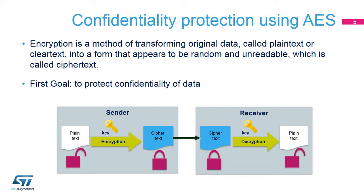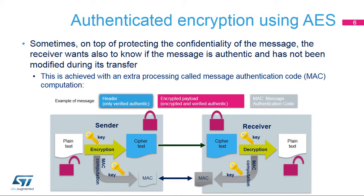The sender encrypts a plaintext message using a secret key, and the receiver decrypts the message using the same secret key. AES is therefore based on symmetric keys — the same key is used for both encryption and decryption. Appending a message authentication code to the ciphertext enables the receiver to confirm that the message has been originated by the expected sender. The AES block is capable of generating the MAC along with data encryption.